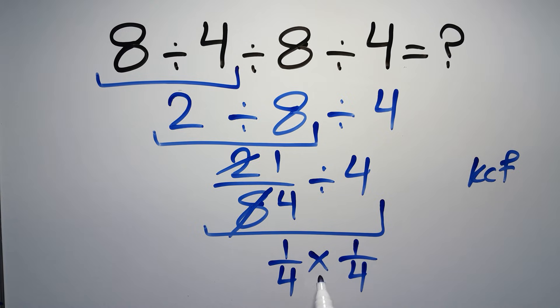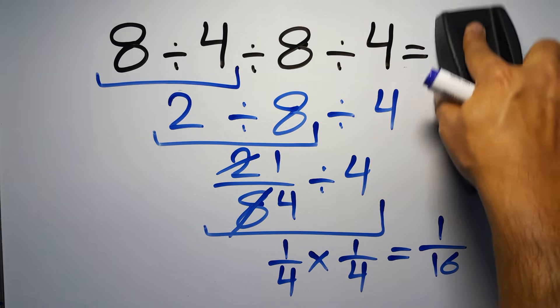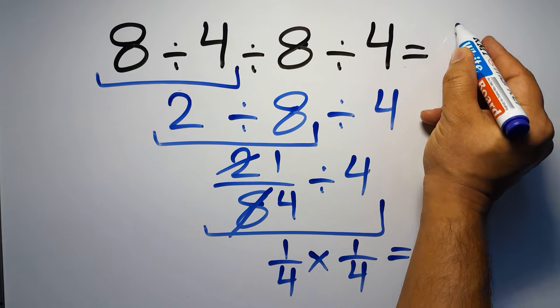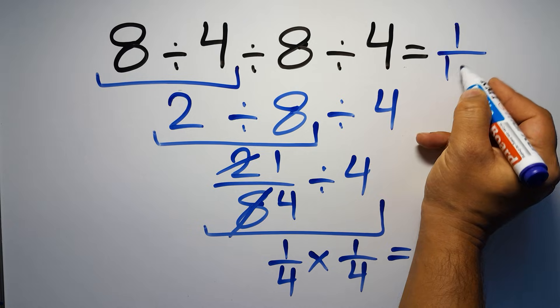so 1 over 4 times 1 over 4, which equals, 1 times 1 gives us 1, and 4 times 4 equals 16, so 1 over 16, and this is our final answer to this problem, the correct answer is 1 over 16